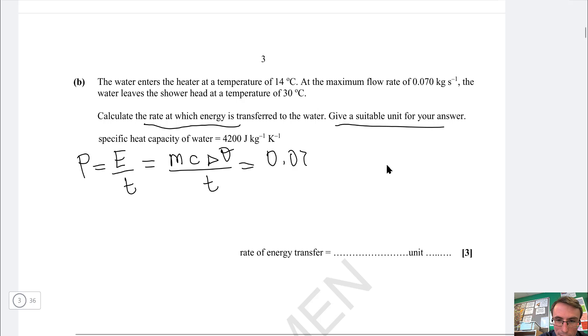Multiply that by the change of temperature which is, because we're going between 30 and 14, going to be 16 degrees and all of this is going to happen in just one second. If we put this into a calculator we are going to get around 4704, let's call that 4700 and the units are watts.